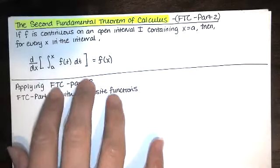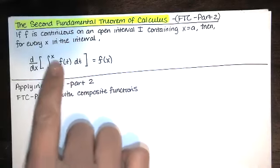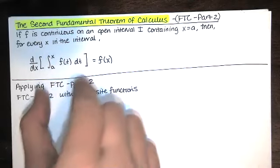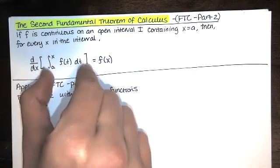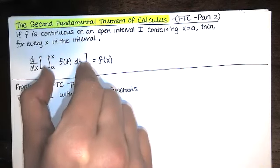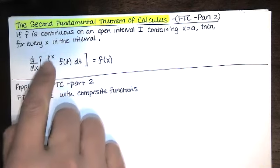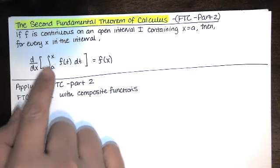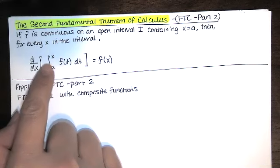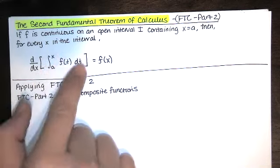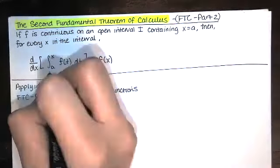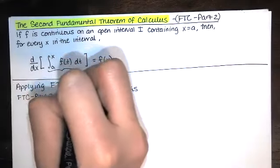Almost every time I teach this, students get confused by this right here. Let's focus in on this expression in brackets. This is not a number. This is actually an area under the curve, but that area is changing. This is actually a function of x, so I want to think of this as a function of x.